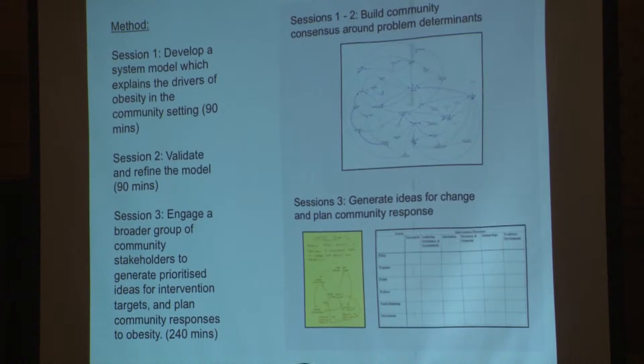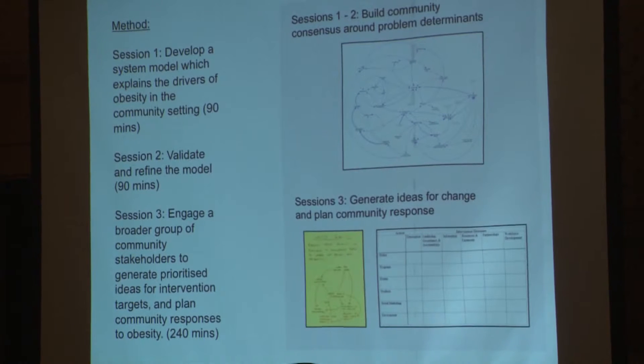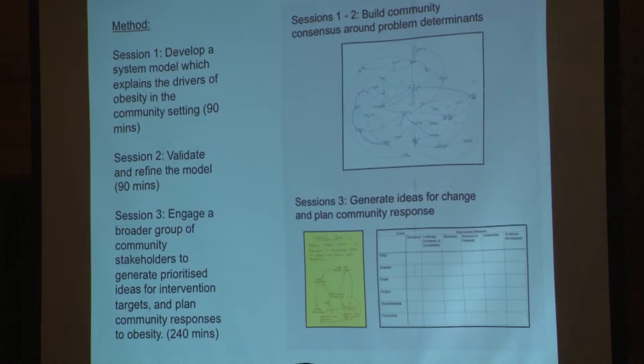The method we developed for doing this involved three workshop sessions. We've done this with groups ranging from 15 to 20, up to 50, and at the absolute outside, 100 important community stakeholders — people who are related in their work and their life to the problem, in this case obesity, that we're wanting to investigate. We work over three sessions to develop a system model — a complex kind of logic model — which explains the drivers of obesity in that community setting, discussing the issue with these people, deciding what are those important determinants and identifying those complex interdependencies.